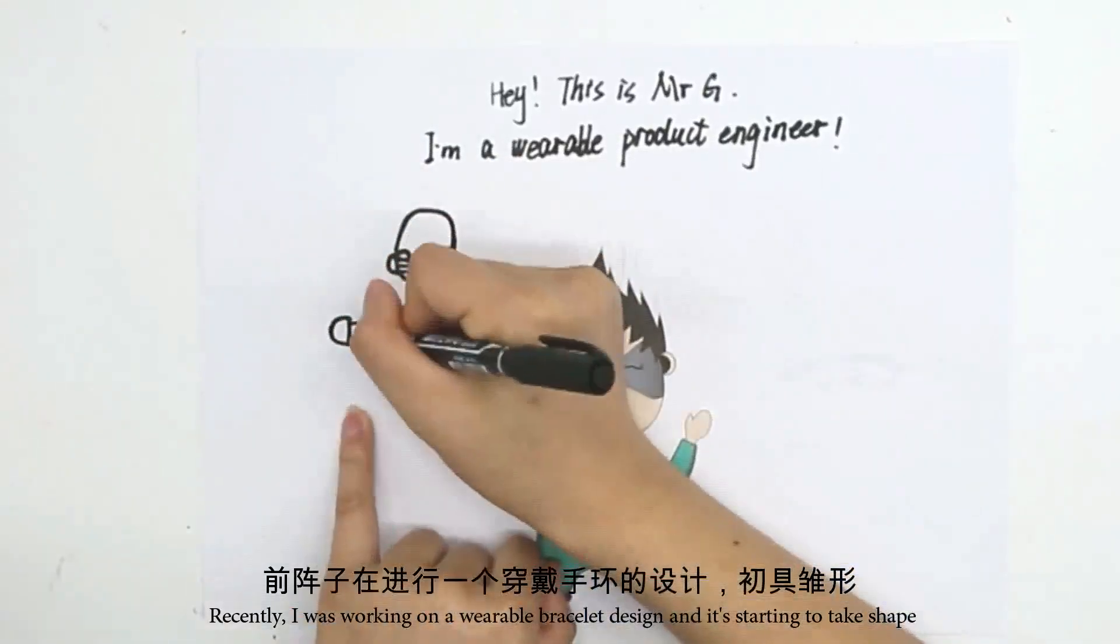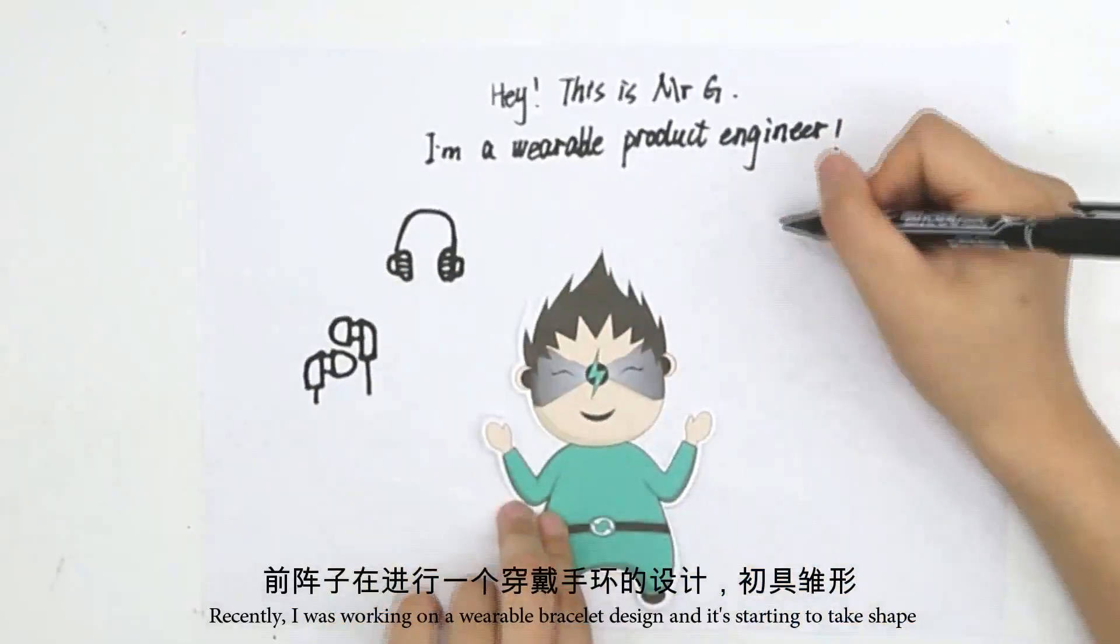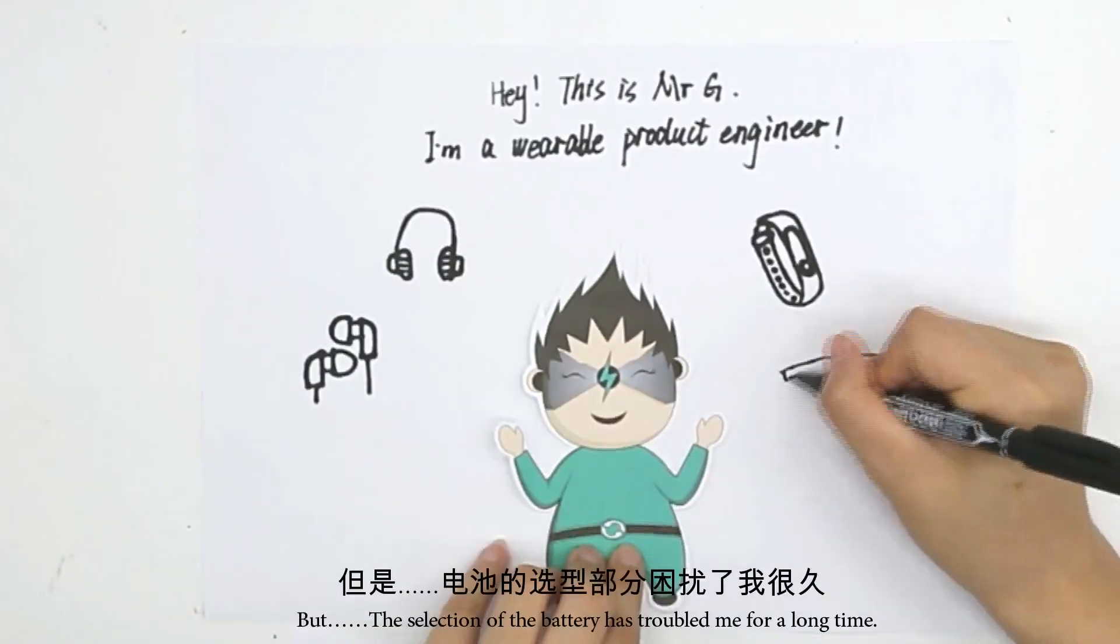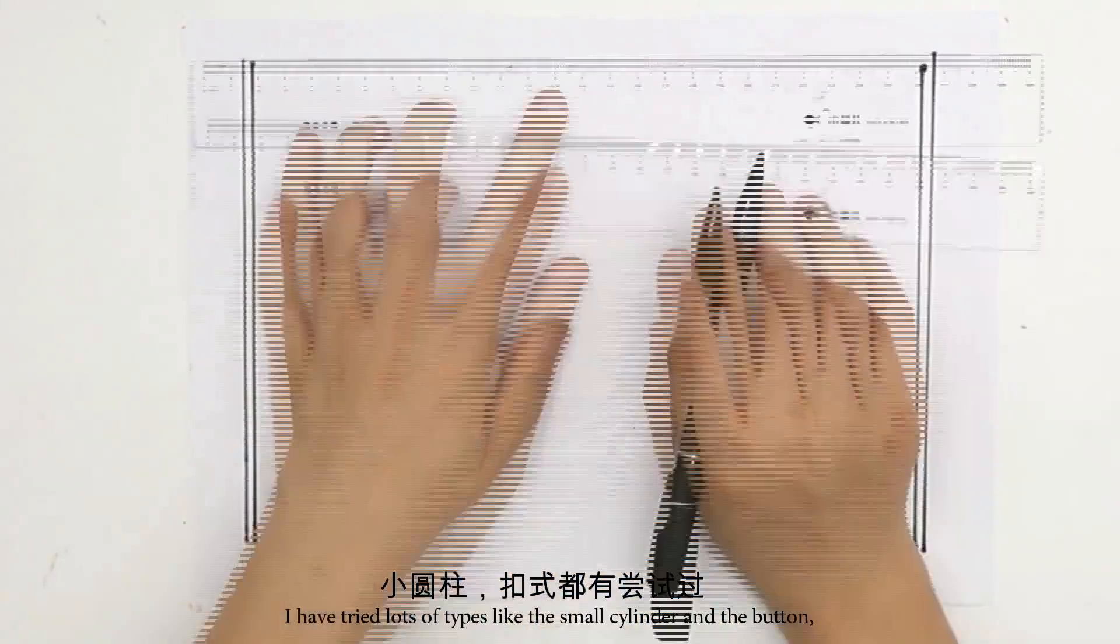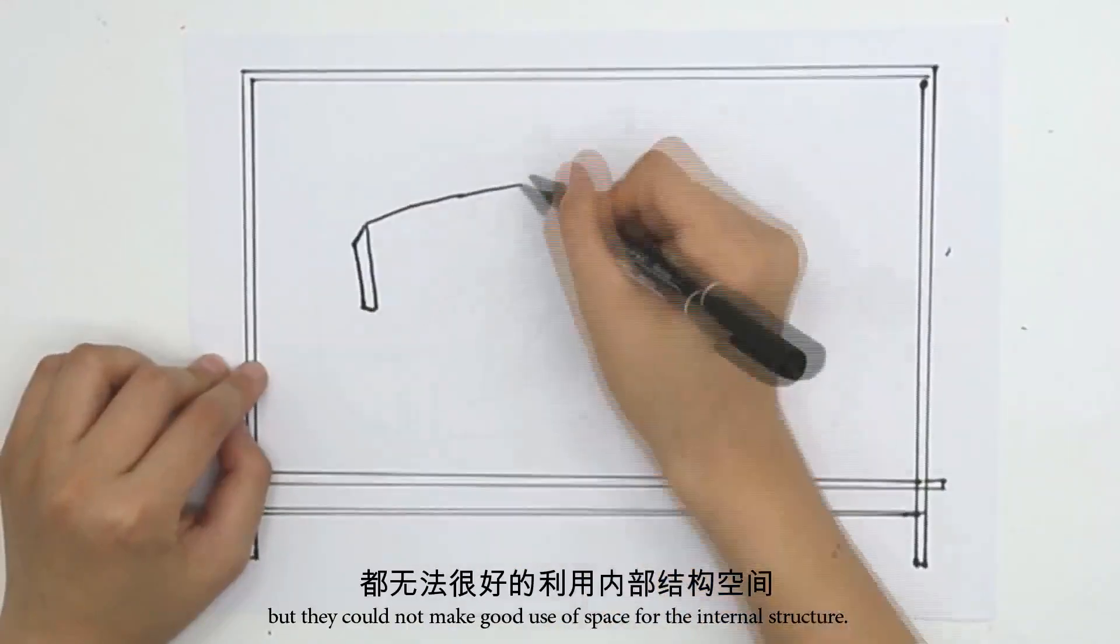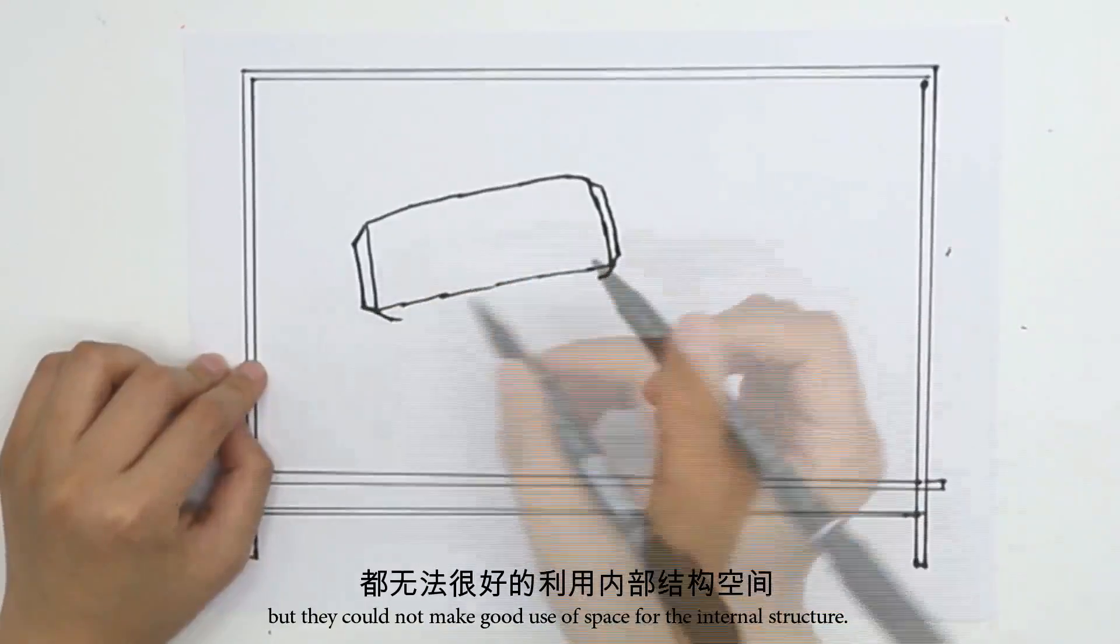Recently I was working on a wearable bracelet design and it's starting to take shape, but the selection of the battery has troubled me for a long time. I have tried lots of types like the small cylinder and the button, but they just could not make good use of the space for the internal structure.